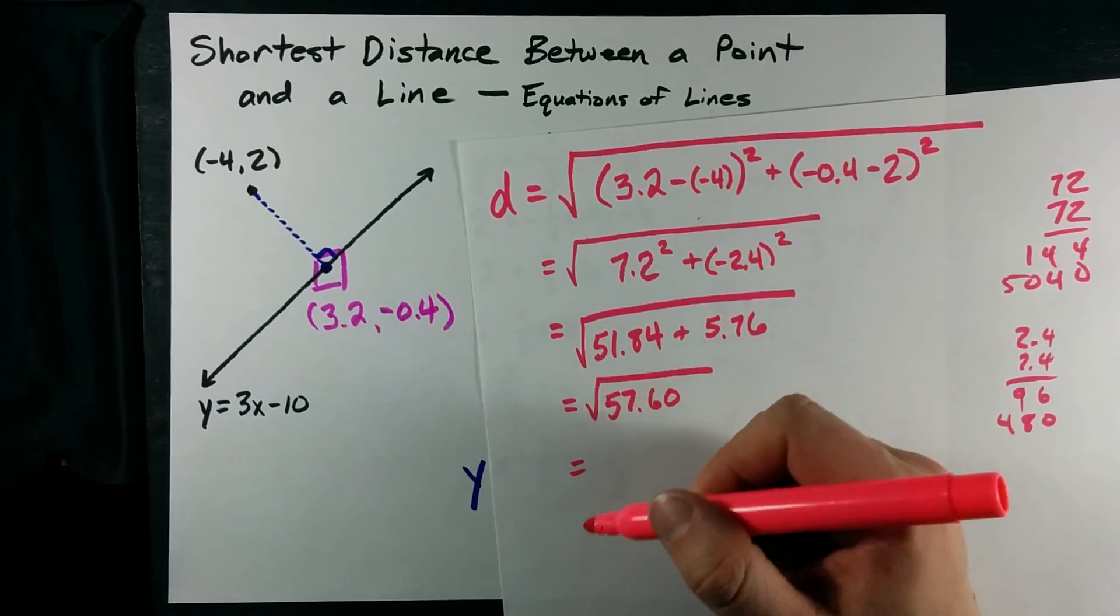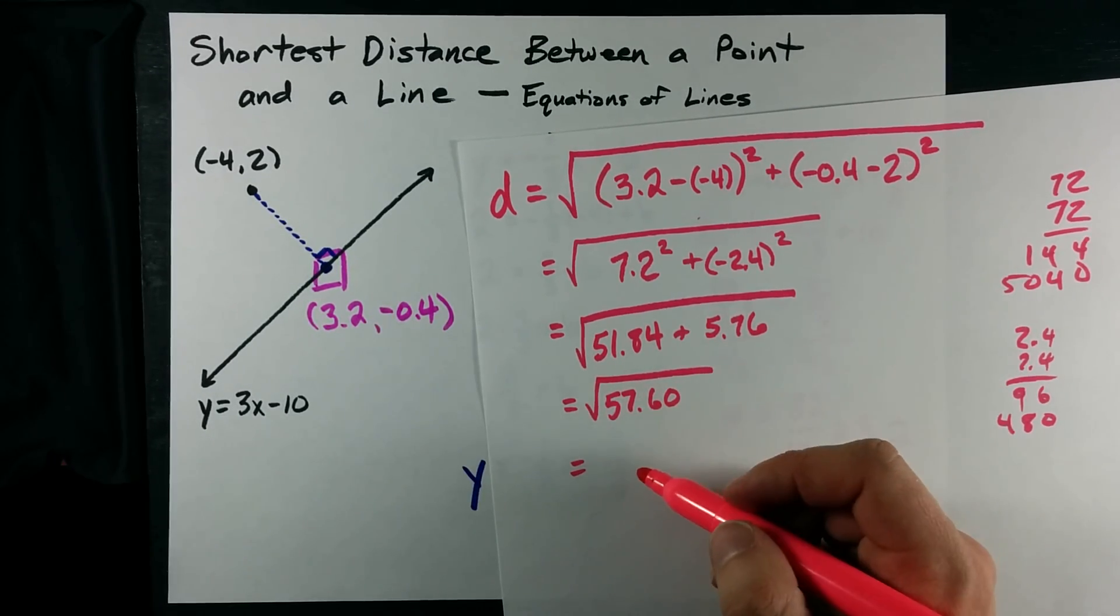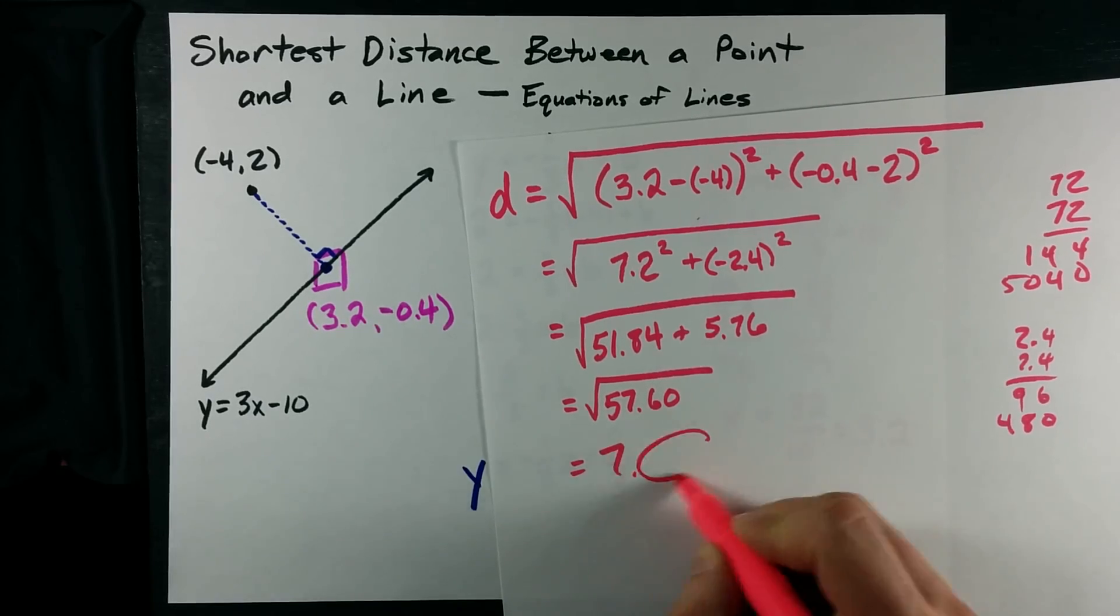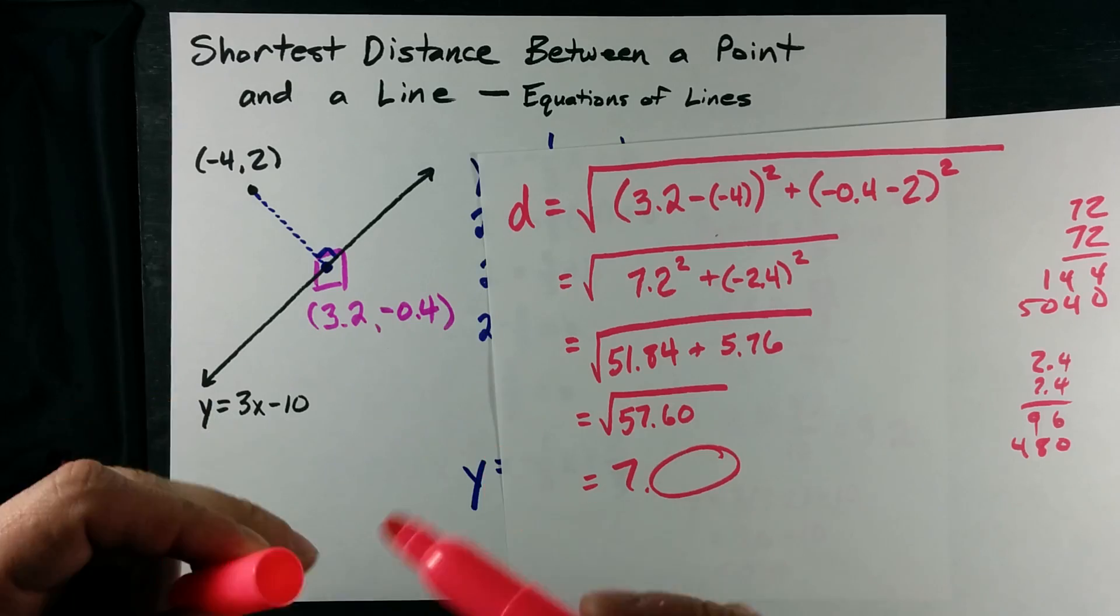When I add those together, I get 57.60 and then I can take the square root of that. I'm not doing it. I don't even know how to take the square root in my head. It turns out to be, I don't know, between 7 and 8. 7 point something. Whatever the point is, you can use the distance formula to get the distance.